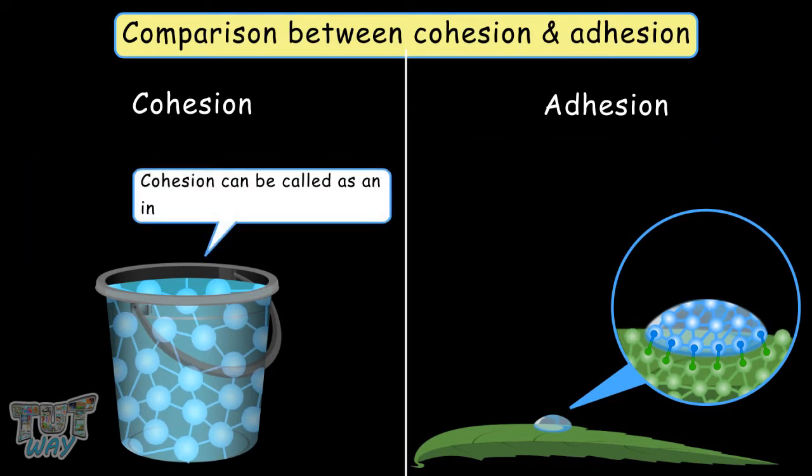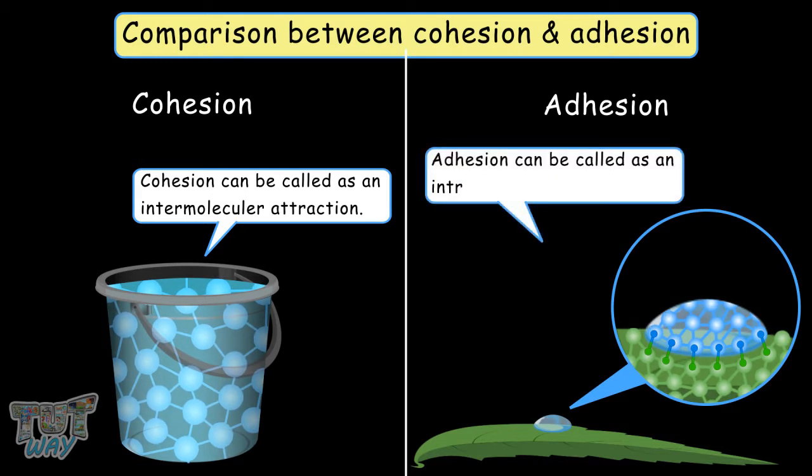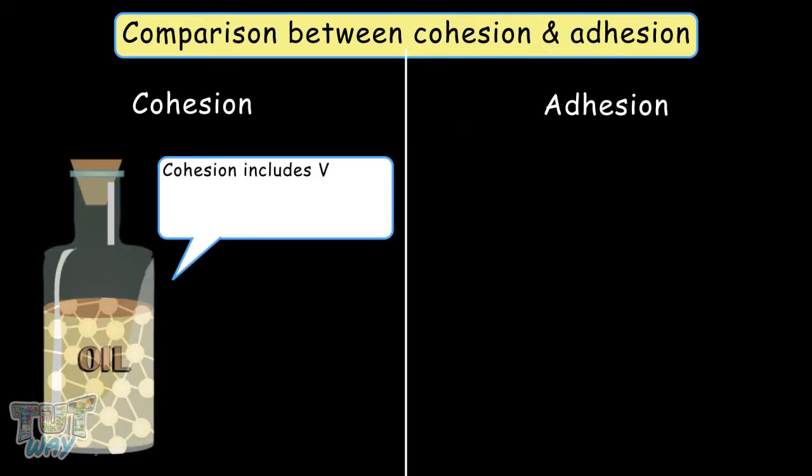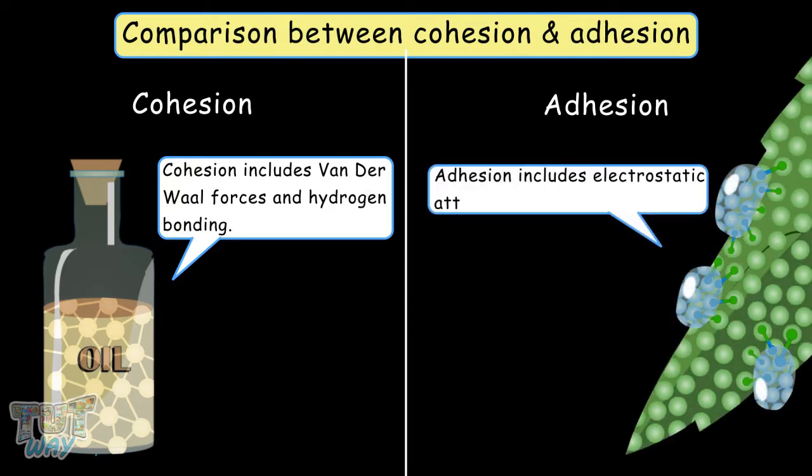Cohesion can be called an intermolecular attraction, whereas adhesion can be called an intermolecular attraction. Cohesion includes van der Waals forces and hydrogen bonding. Adhesion includes electrostatic attractions.